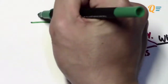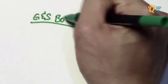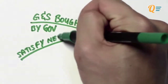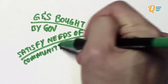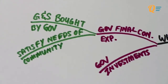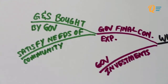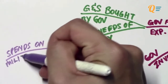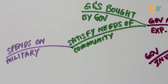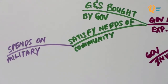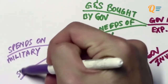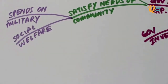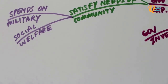Just like households, governments spend as well. These are goods and services bought by the government, and the difference from household consumption is that the government tries to satisfy the needs of the community. For example, the community needs defence — as a country, they need to protect themselves — so the government might spend on military, building the army, air force, and the navy. Another case might be spending on social welfare, such as helping out low-income groups, building homes for the homeless, creating charities and funds.